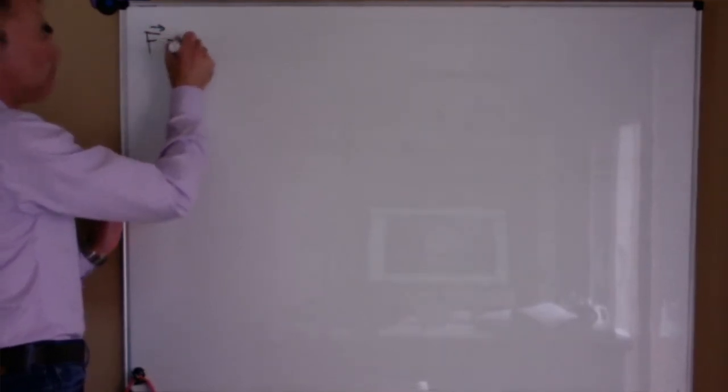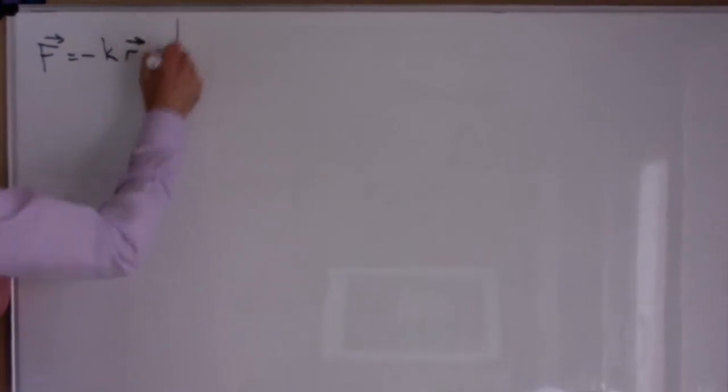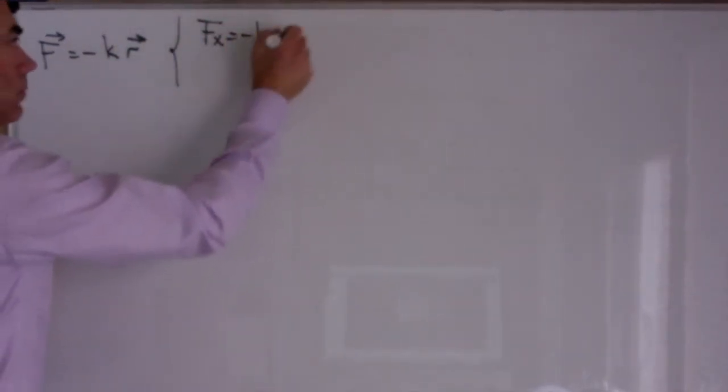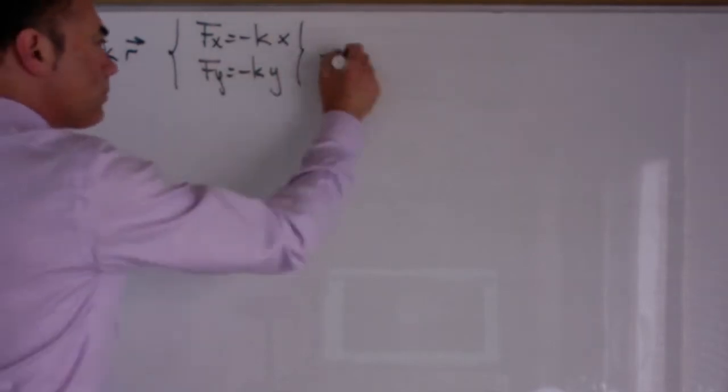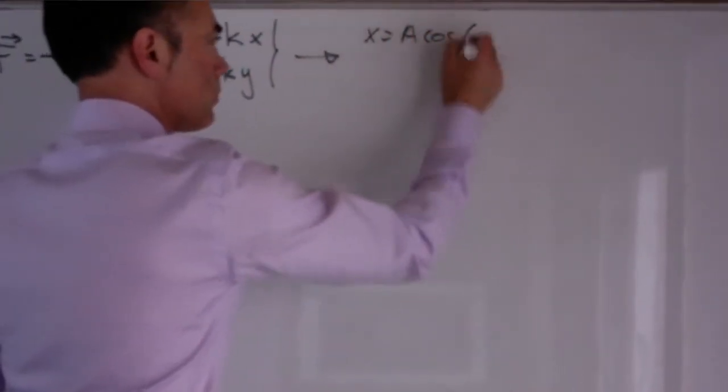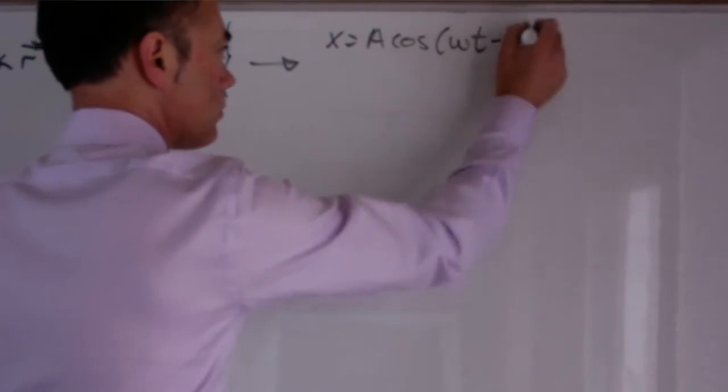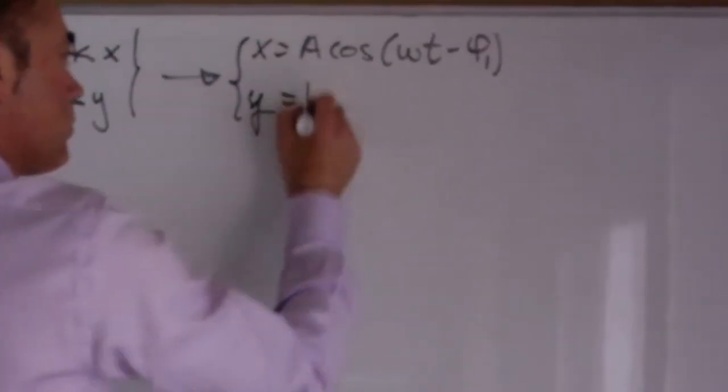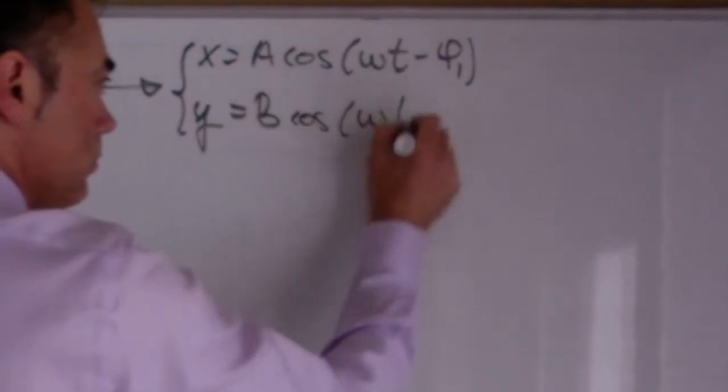Let's consider we have a simple harmonic oscillator on a plane. The recovery force F vector is equal to k times r vector. We can decompose this force into the x and y axes. We already know the solution to this motion in both axes: amplitude times the cosine of omega t plus a phase, where these phases depend on the initial conditions of the motion. These equations correspond to the case where the recovery forces from both axes are the same, therefore they have the same frequency.